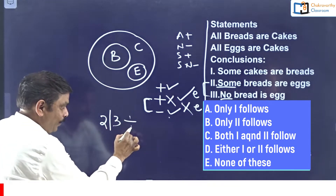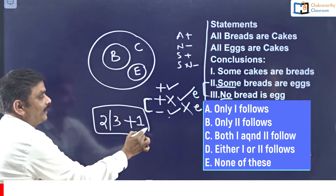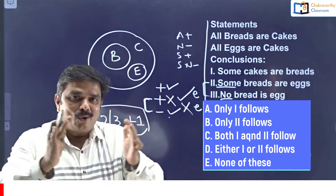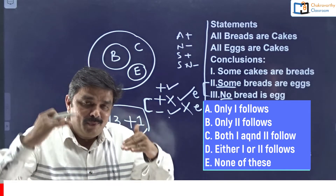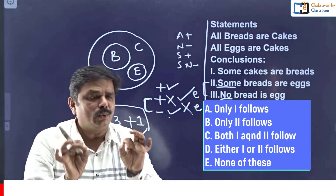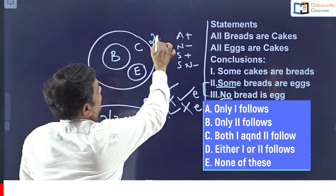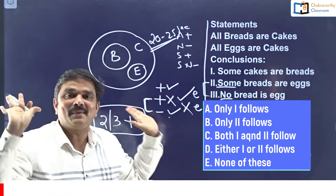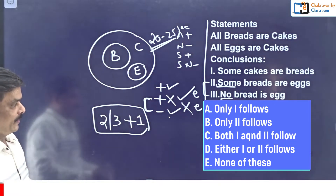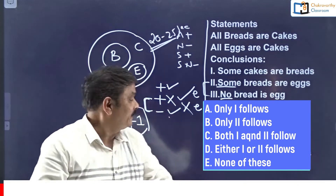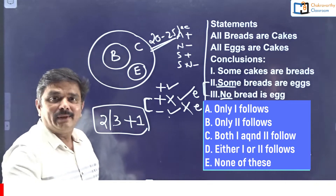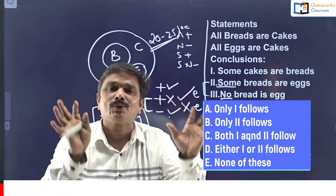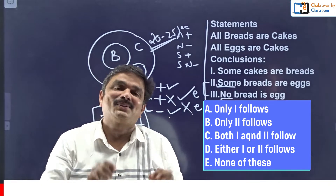My final answer for this one is: second conclusion, third conclusion - either two or three along with one follow. That is the final answer. This question takes maximum 20 to 25 seconds, and our students can do it within 25 seconds with 200% accuracy. The answer is not reflected in any of the given options, so option E - none of these - is the right option.